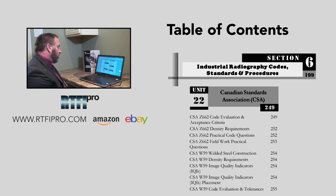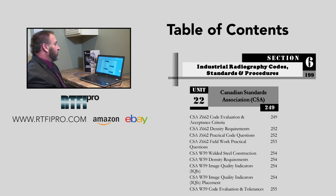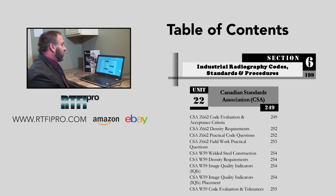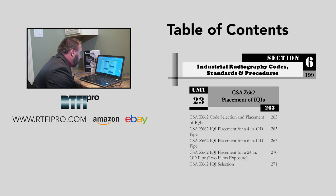Unit twenty-two addresses CSA — Canadian Standards Association — covering CSA Z662 code evaluation and acceptance criteria, CSA Z662 density requirements, CSA Z662 practical code questions with various code question examples, CSA Z662 fieldwork practical questions, CSA W59 Welded Steel Construction, CSA W59 density requirements, CSA W59 image quality indicators, CSA W59 IQI placement, and CSA W59 code evaluation and tolerances.